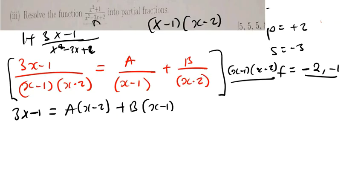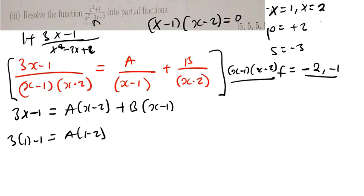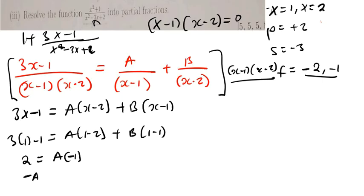Now equate each factor to zero. The x values are x equals 1 and x equals 2. Substituting x equals 1: 3(1) minus 1 equals 2, and we get A(1 minus 2) plus B(1 minus 1), which gives 2 equals negative A plus 0. Therefore negative A equals 2, so dividing both sides by negative 1 gives A equals negative 2.